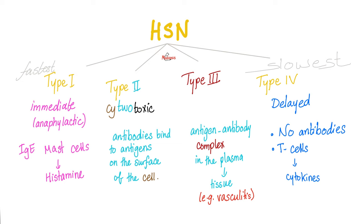Can you describe Type 1 in a few words? Sure. Immediate, anaphylactic, IgE, mast cells. They rupture — they degranulate, releasing histamine. And histamine can give you the symptoms of an anaphylactic shock.